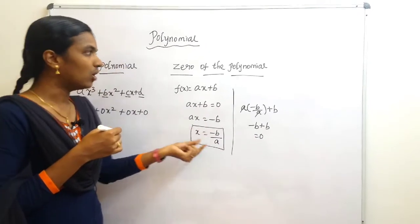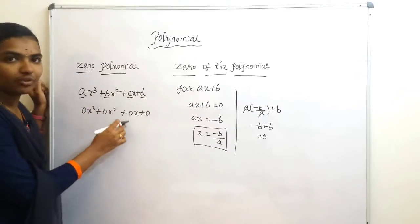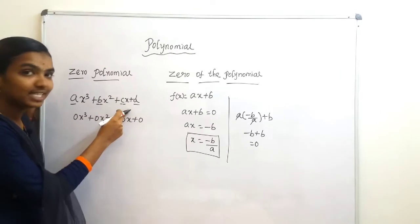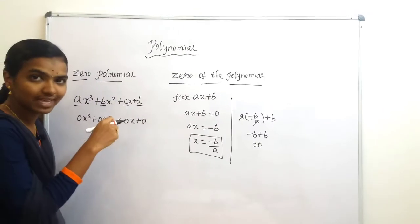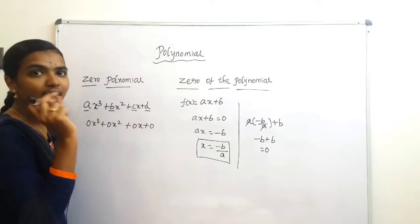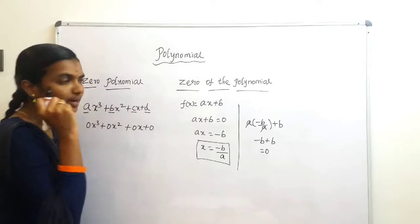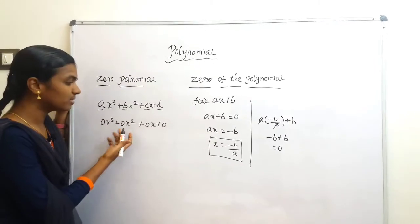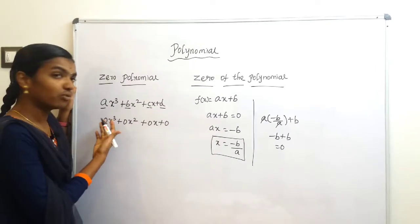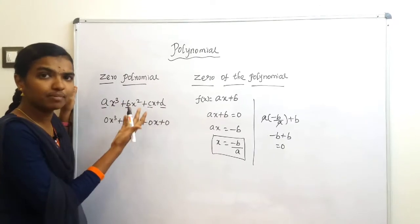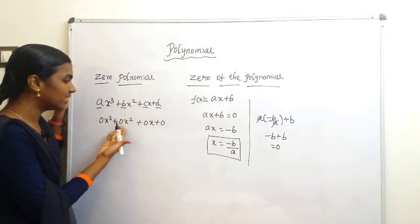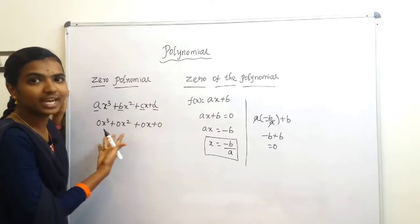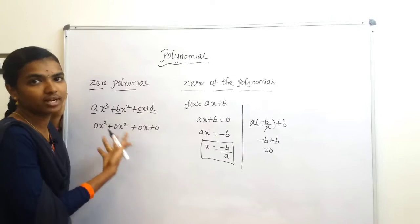Now, how do we find the degree of the zero polynomial? The degree of a polynomial is the highest power of the variable. But in the zero polynomial, we cannot find the highest variable power, because anyone can take the fourth power, fifth power, or sixth power — but everything becomes zero. So we cannot determine the highest power of the variable.